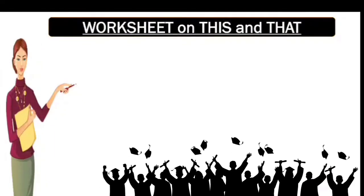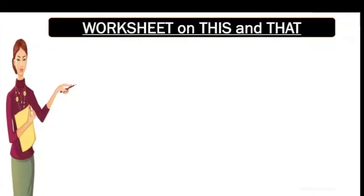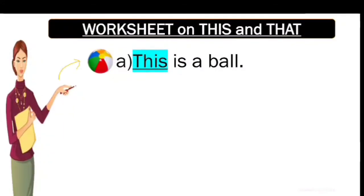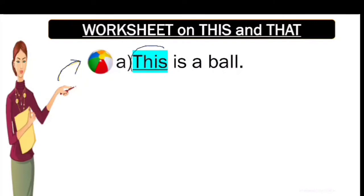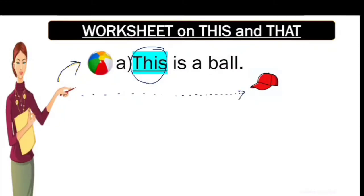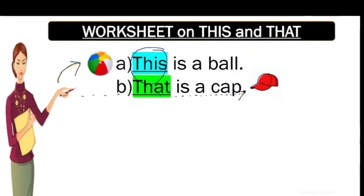Students, let us do some worksheets on 'this' and 'that.' Let's see the picture and answer it. Ball — it is present near Miss Rosie, so the answer is: this is a ball. Cap — cap is present very far from Miss Rosie. Miss Rosie will run and then get the cap, so it will be: that is a cap.